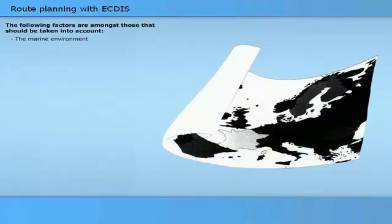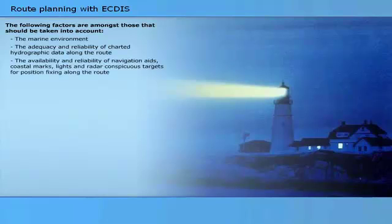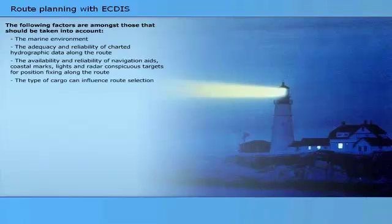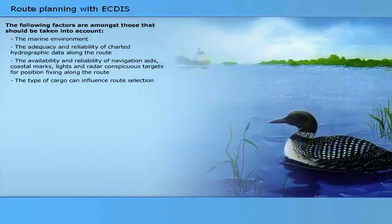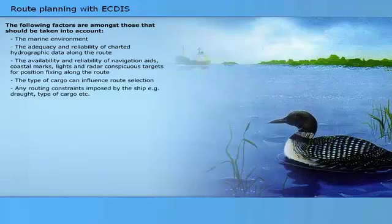The marine environment; the adequacy and reliability of charted hydrographic data along the route; the availability and reliability of navigation aids, coastal marks, lights, and radar conspicuous targets for position fixing along the route; and the type of cargo, which can influence route selection, along with any routing constraints imposed by the ship — for example, draft and type of cargo.